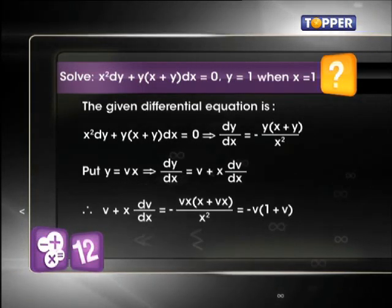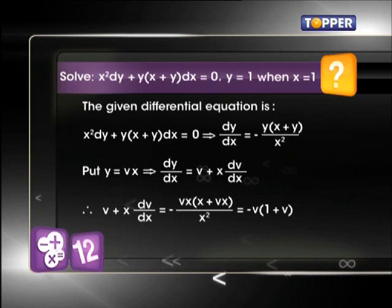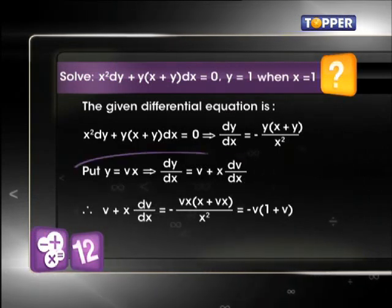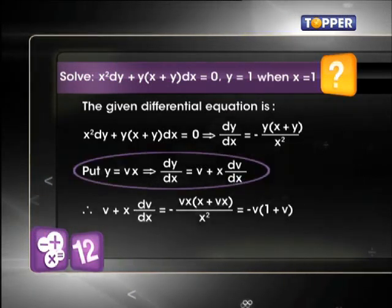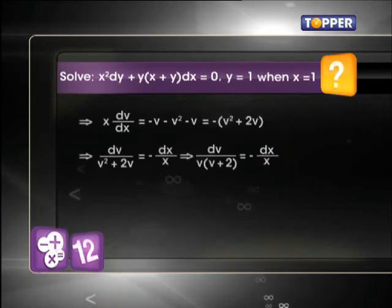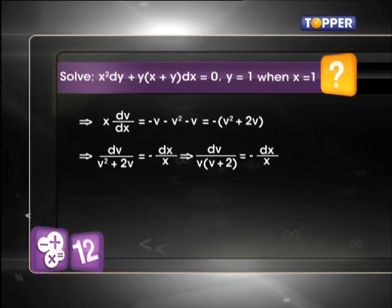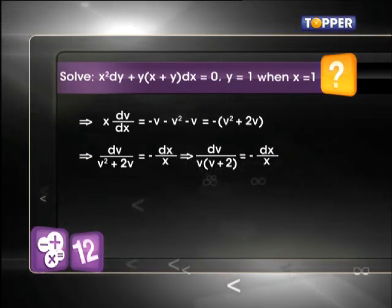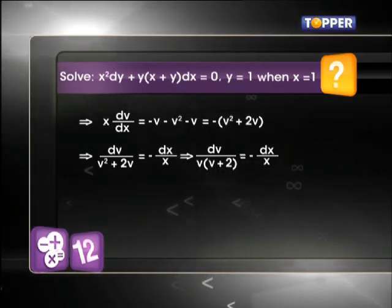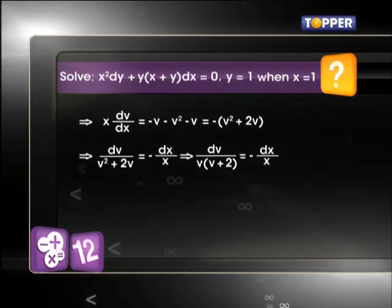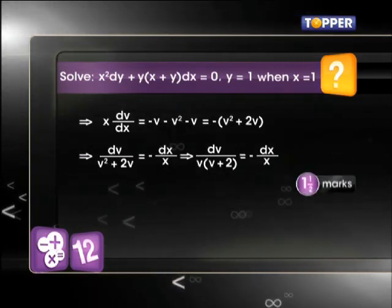So we put y = vx in this equation and get the differential equation in terms of x and v. On simplifying the equation becomes dv/[v(v+2)] = -dx/x. This initial working will fetch you one and a half marks.